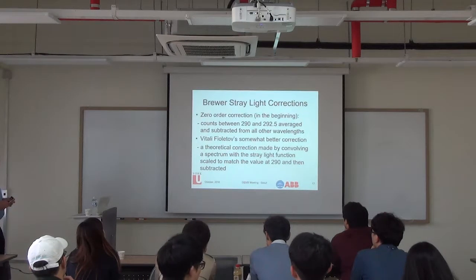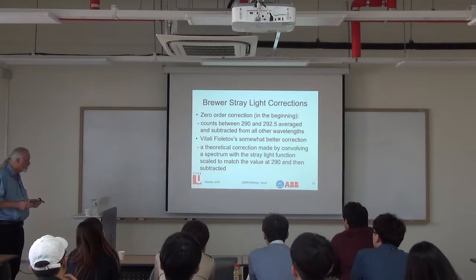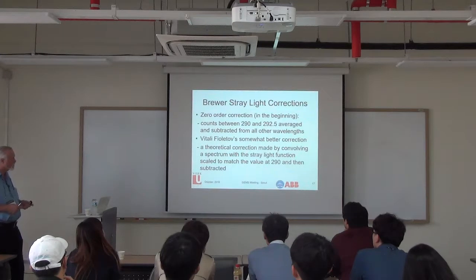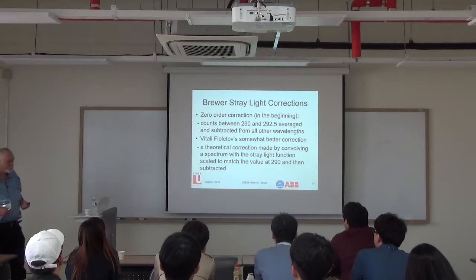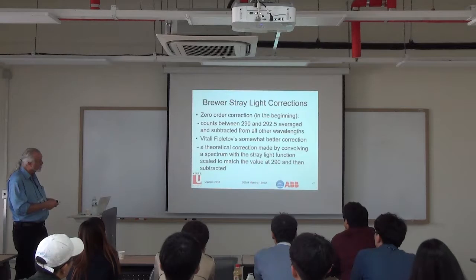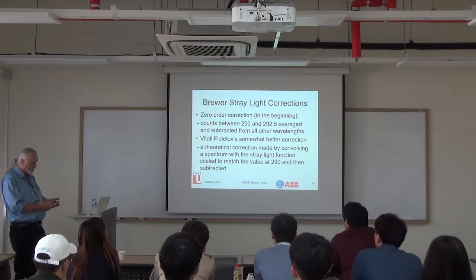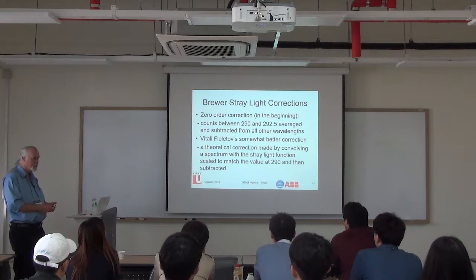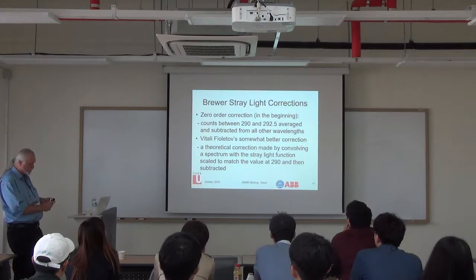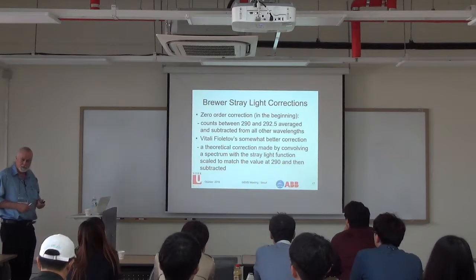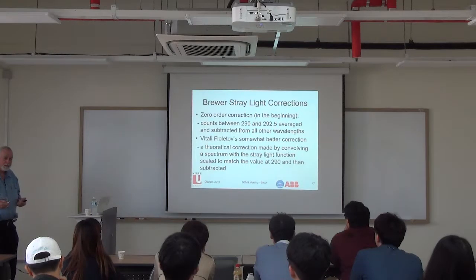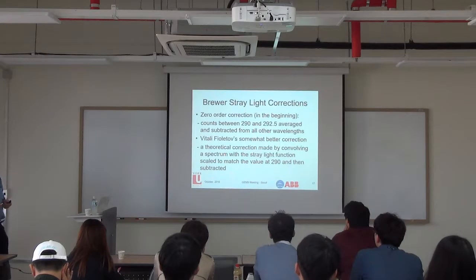When we began doing long scans from 290 to about 340 nanometers to measure the UV spectrum and calculate the UV index, we found a lot of counts coming in at 290 to 295 nanometers that were clearly not real light—it was light coming from longer wavelengths. The zero-order correction was to average about five points in that region—including dark count plus stray light—and subtract it from all other wavelengths. This was a good first approximation, but in the end we found the nearby stray light was the real problem, and this didn't represent it well.